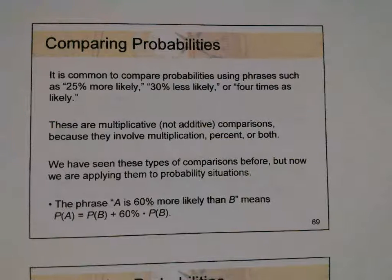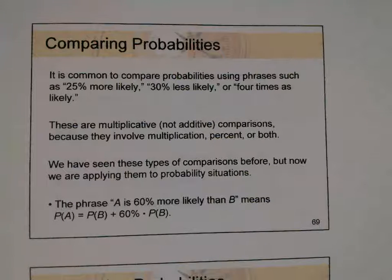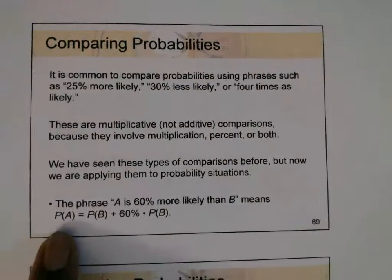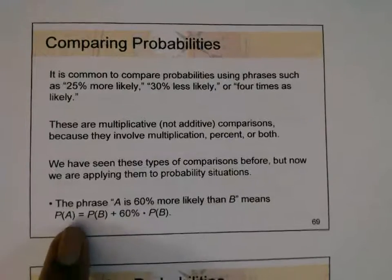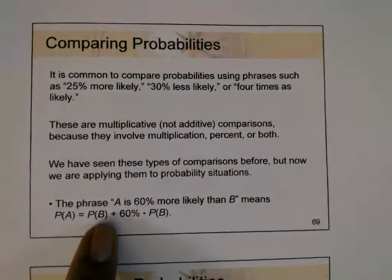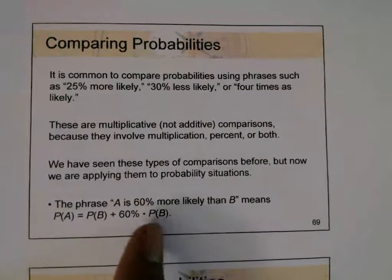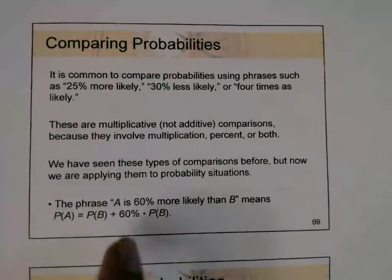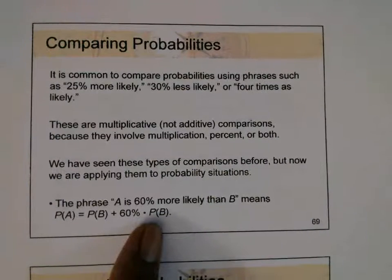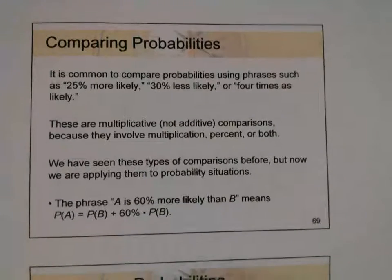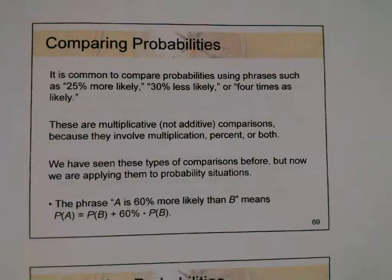So we only deal with multiplicative comparisons. Now the phrase 'A is 60% more likely than B' means this: the probability of event A equals the probability of B plus 60% times the probability of B. So that means we take 60% of the probability of event B and then add that to the probability of event B — that would be more likely, meaning addition.